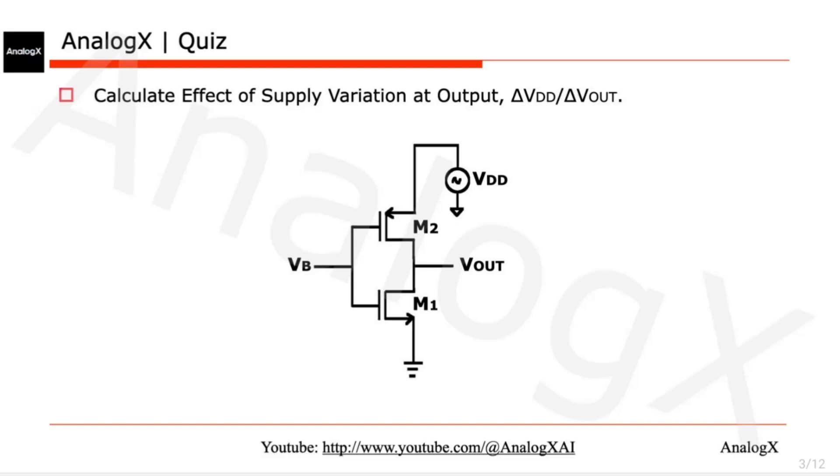Hello everyone, today we will solve this numerical problem. They are asking to calculate the effect of supply variation at output, that is ΔVDD/ΔVOUT. Basically, they are asking for the power supply rejection ratio.